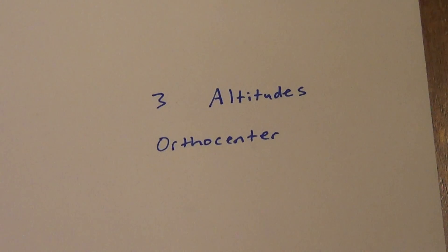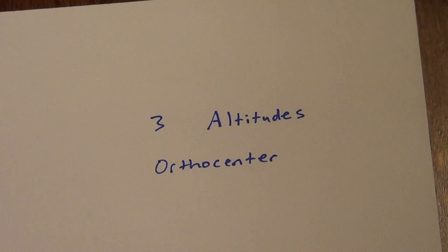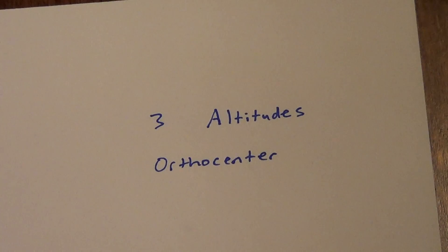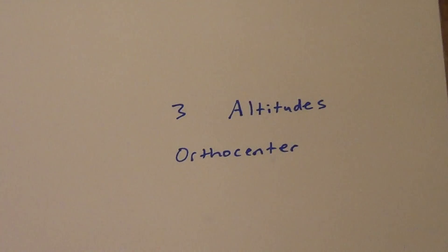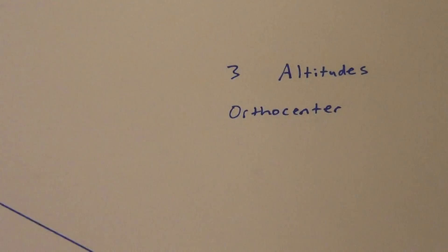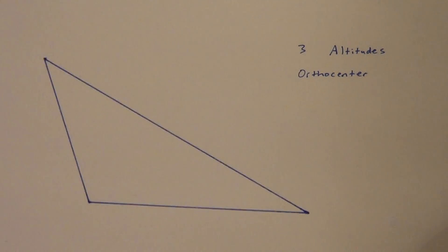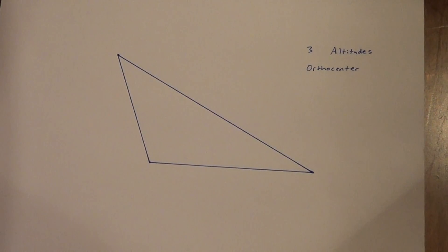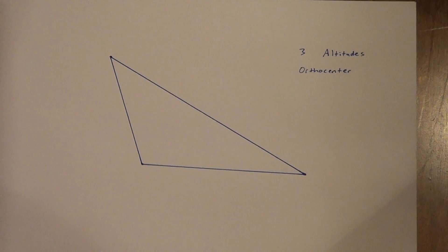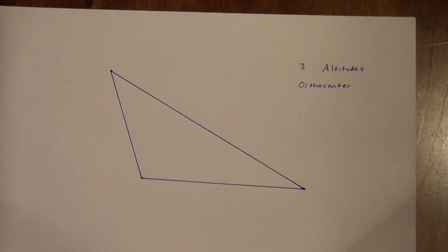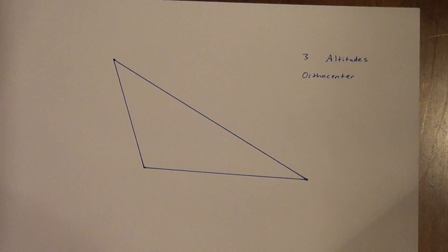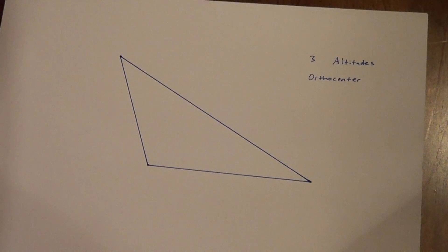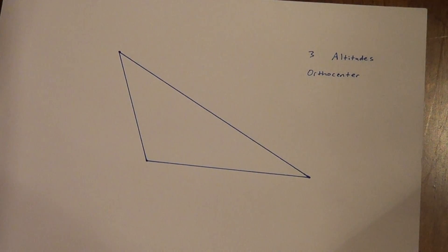Here we are on our fifth and final piece of compass work: altitudes. We're going to do three altitudes, and they're going to meet at a point called the orthocenter. I have an obtuse triangle here, and an obtuse triangle is actually a little bit more difficult than some other ones, so that's why I chose to do an obtuse triangle. We need to remember what an altitude is.